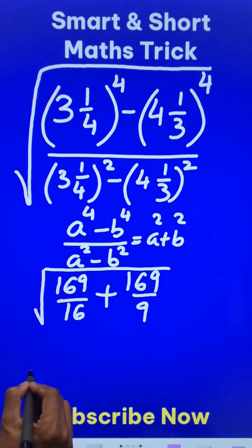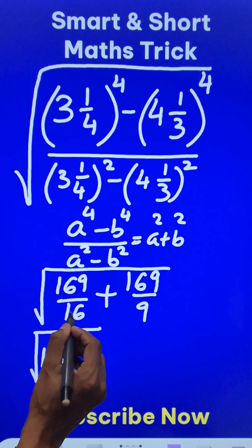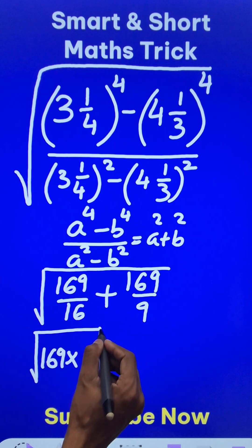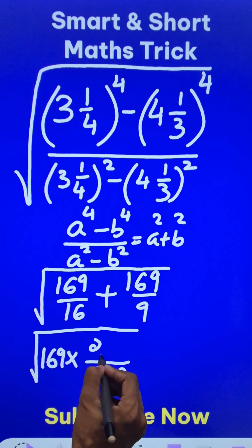Now, within the square root, if you see carefully, 169 is a common factor which gives you 1 by 16 plus 1 by 9, and that becomes 16 into 9 is the LCM, and 9 plus 16 is 25.